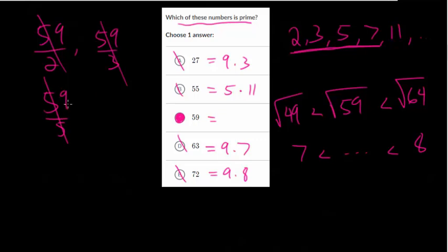59 divided by 3, well it's not divisible by 3 because 5 plus 9 is 14 and 3 does not go into 14. If we do 59 divided by 5 that will give you a decimal because it doesn't end in a 0 or a 5. And 59 divided by 7, well 7 goes into 49 and 56 and 63, so it skips over 59.